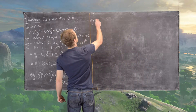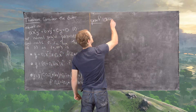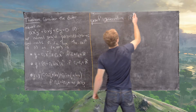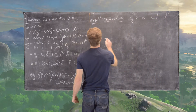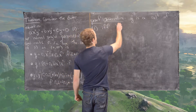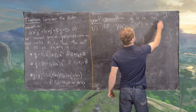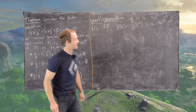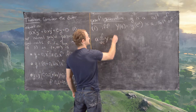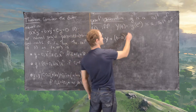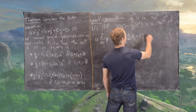Now let's look at the proof, which is built off the following observation: y is a solution of the Euler equation if and only if Y(t) = y(e^t) is a solution of a·Y'' + (b − a)·Y' + c·Y = 0, where differentiation is now with respect to t.